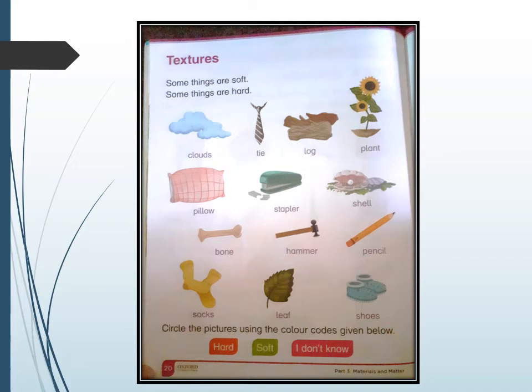First, I have to find red color for hard objects. First picture is cloud. Is cloud hard? No. Log—log is hard, yes, so I'm going to circle with red color here. Next is stapler. Stapler is hard, yes, so we need to circle the stapler with red color.